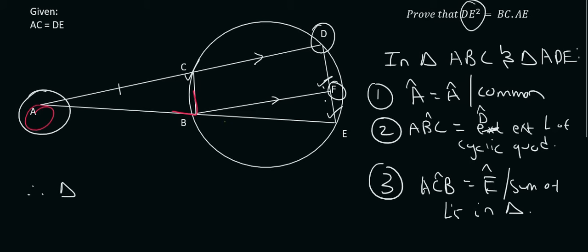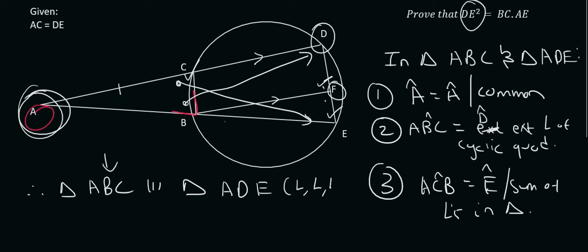Therefore, triangle ABC is similar—now we must get the order correct. In the small triangle, angle A goes with angle A in the big triangle. B in the small triangle goes with D, and then C goes with E. The reason for that is angle, angle, angle.